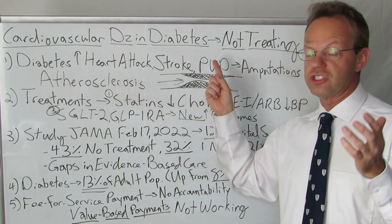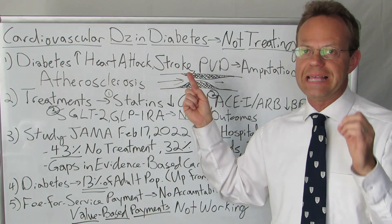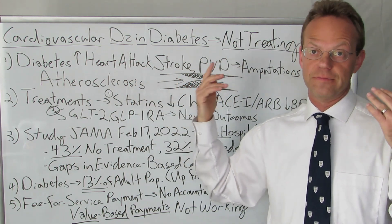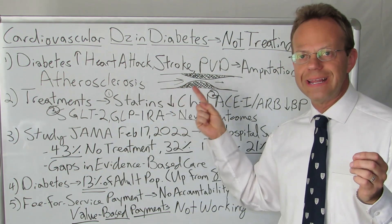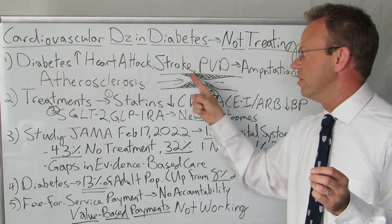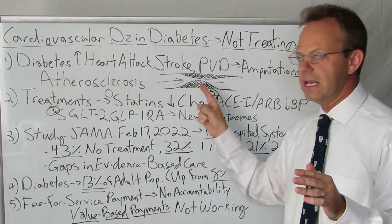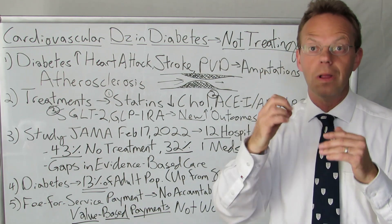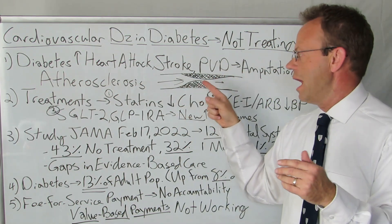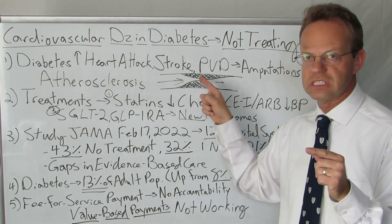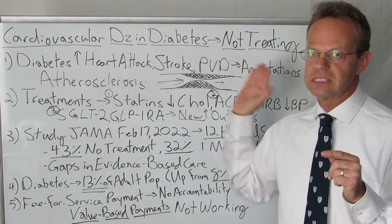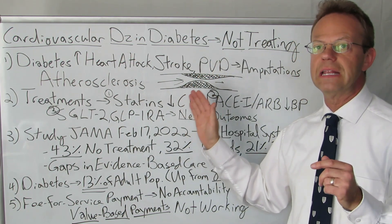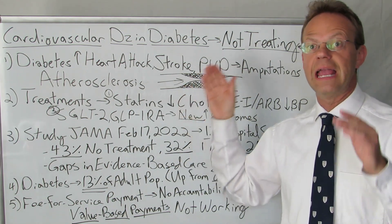Heart attacks you obviously know what that is. The majority of strokes are actually the exact same process of atherosclerosis that happens in the heart, so you can think of a stroke as almost like a heart attack of the brain. This is an artery — this is the narrowing — where the cholesterol blocks more and more of what is referred to as the lumen, or the hole inside of the artery, so the blood can't get through. Then a blood clot spontaneously forms in that spot and blocks the blood flow completely. When it blocks completely in your heart it is a heart attack; in your brain it is a stroke; and in your feet it leads to non-healing ulcers, gangrene, and amputations.